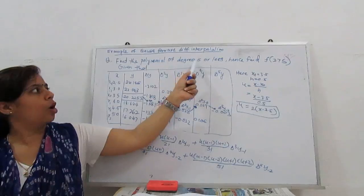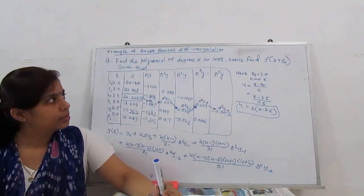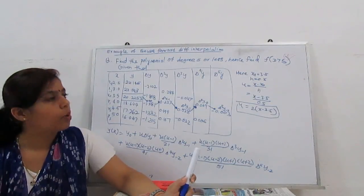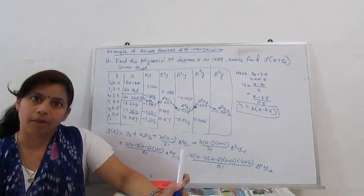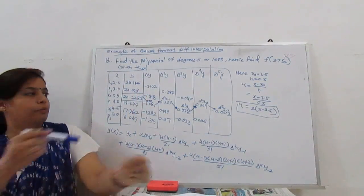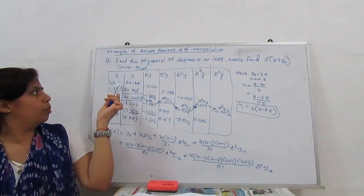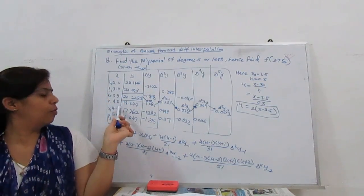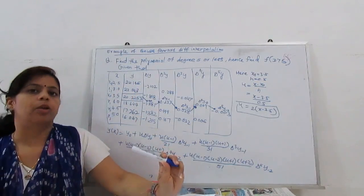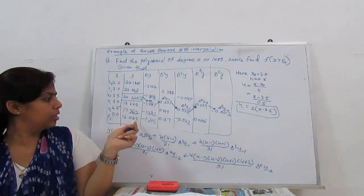Find the polynomial of degree 5 or less, and hence find the value of f(3.75). Given values: x equals 2.5, 3, 3.5, 4, 4.5, 5. The respective values of the function y are also given.